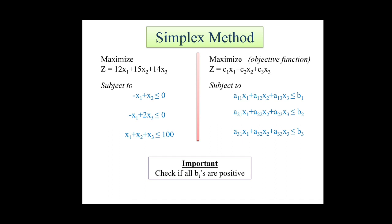So the first important thing which we need to check here is that all bi's are positive. That means b1, b2, b3 values in our question should be positive, and they are positive in our question.